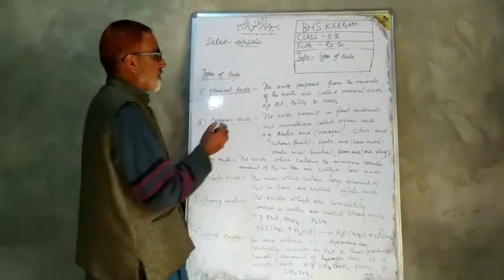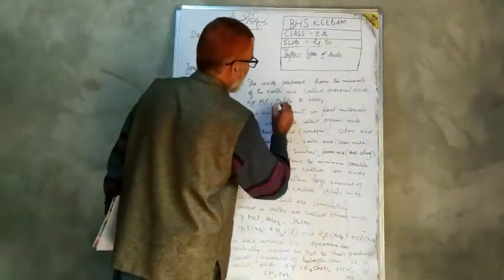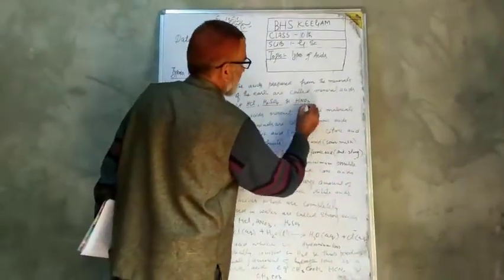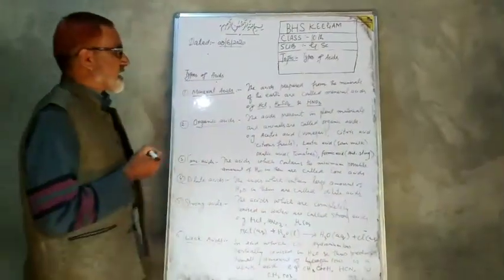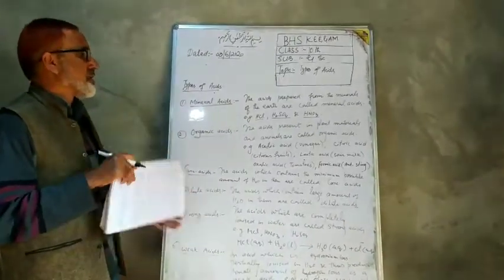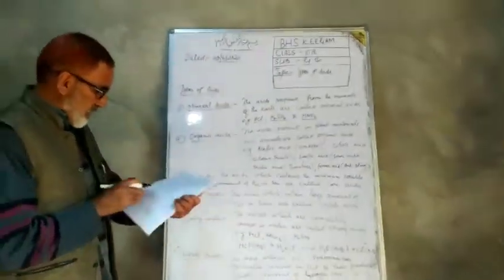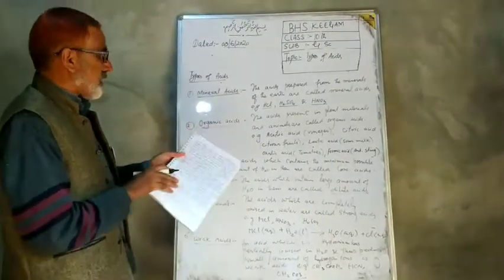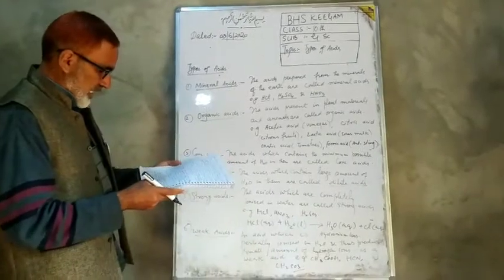The acids derived from the minerals of the earth are called mineral acids. These are also called man-made acids. For example, hydrochloric acid (HCl), sulfuric acid (H2SO4), and nitric acid (HNO3). These are common forms of mineral acid.